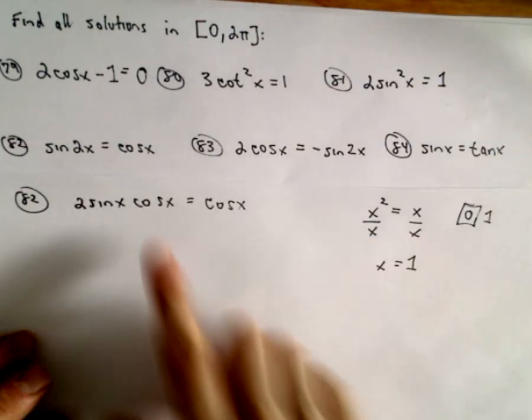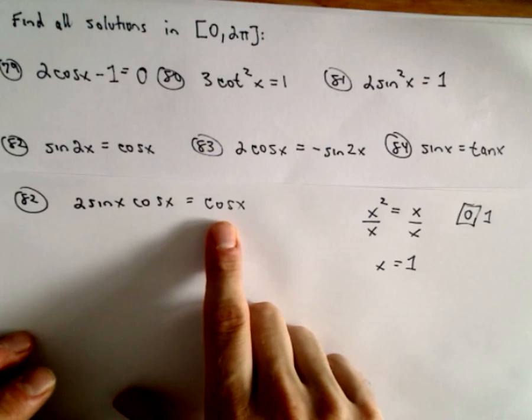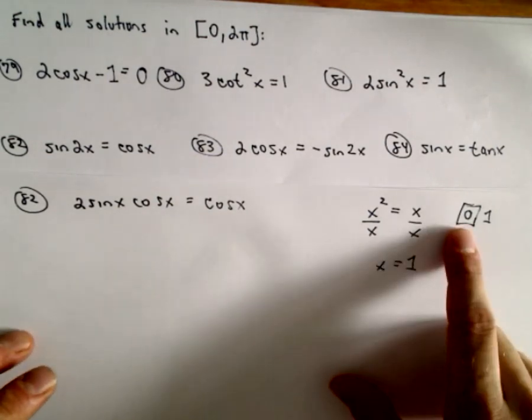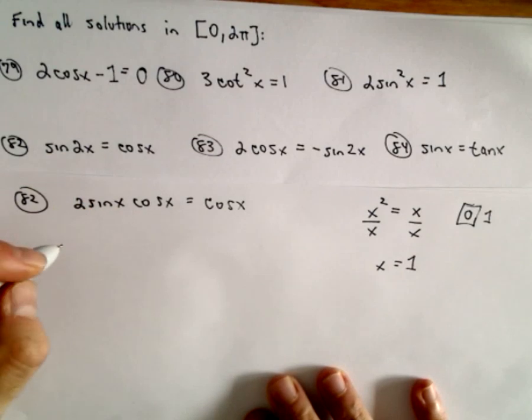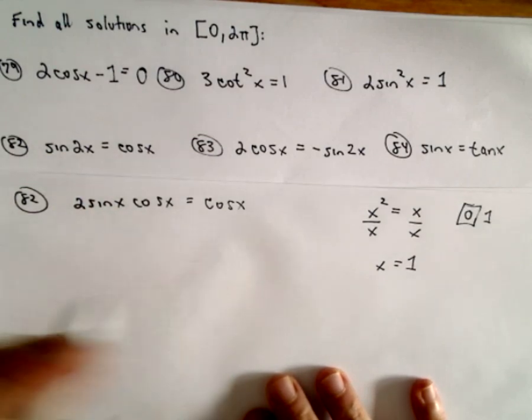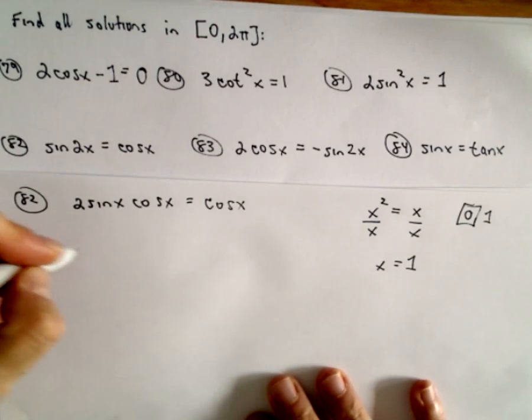And that's what's going to happen if you divide both sides by cosine. You're assuming that cosine can't equal 0, that it wouldn't be a solution. But I think we'll see in fact that it very well can be, so just be careful about that.